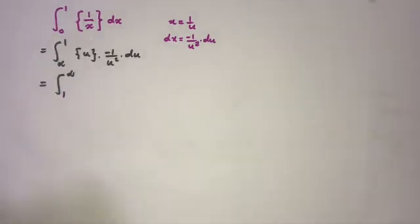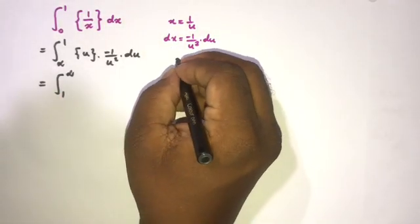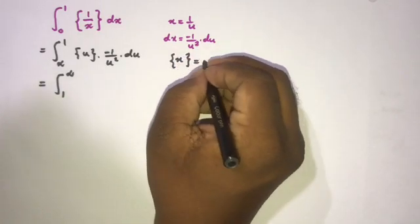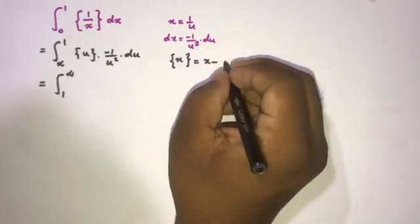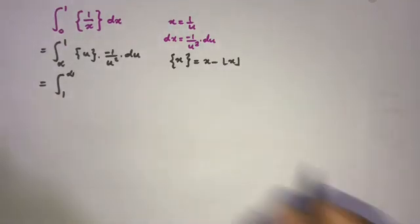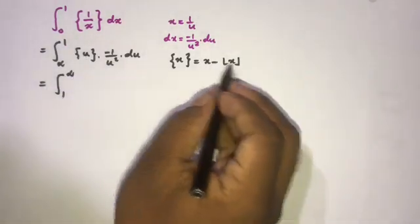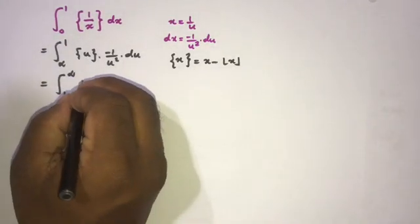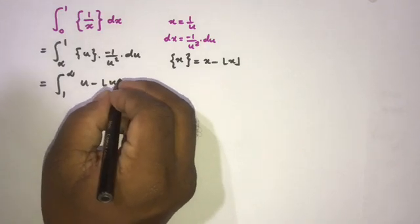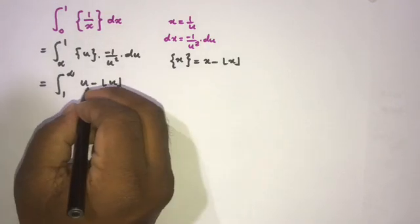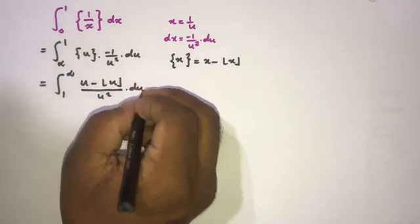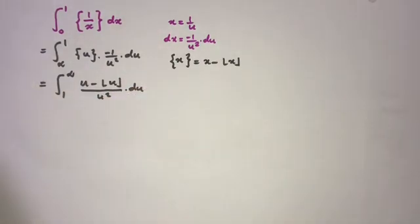Now, we use the definition of the fractional part of u: it equals u minus the floor of u. So instead of the fractional part of u, we can write u minus floor of u, all divided by u squared, du.